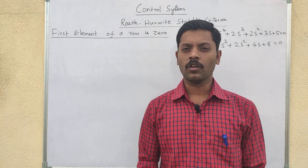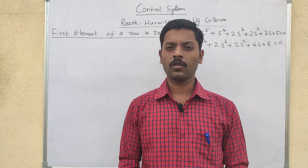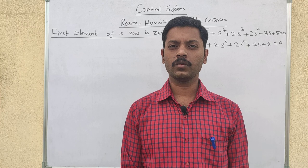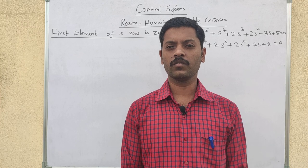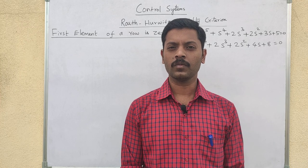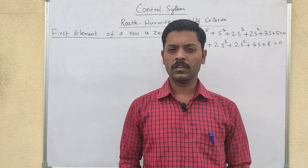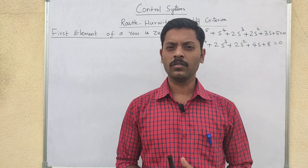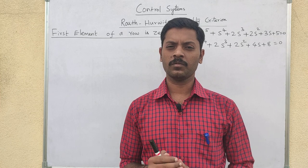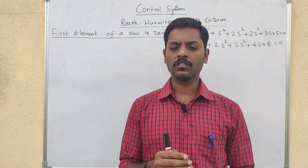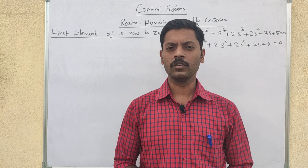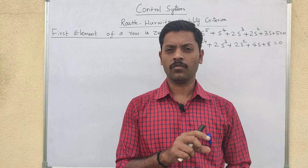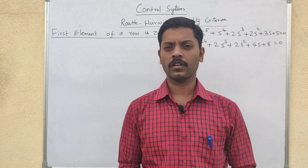Hi friends! So last video covered our control system RH method — the Routh-Hurwitz Stability Criterion. We can see a special case in the RH method where the first element of a row is zero.